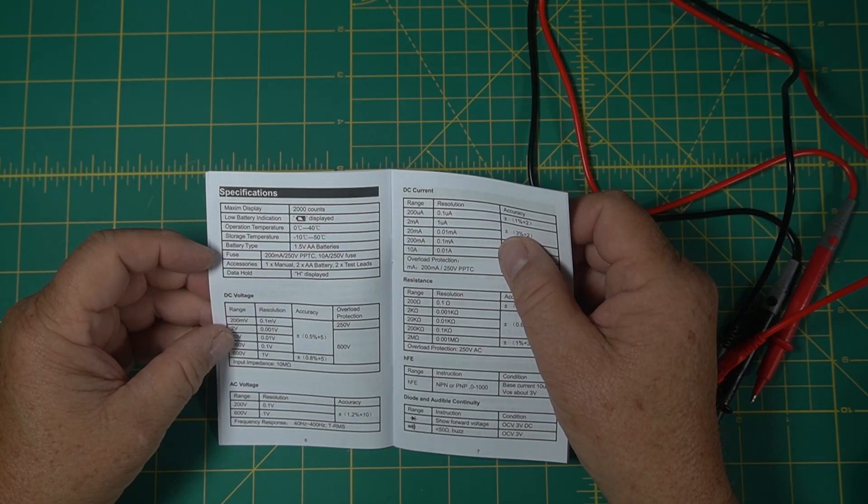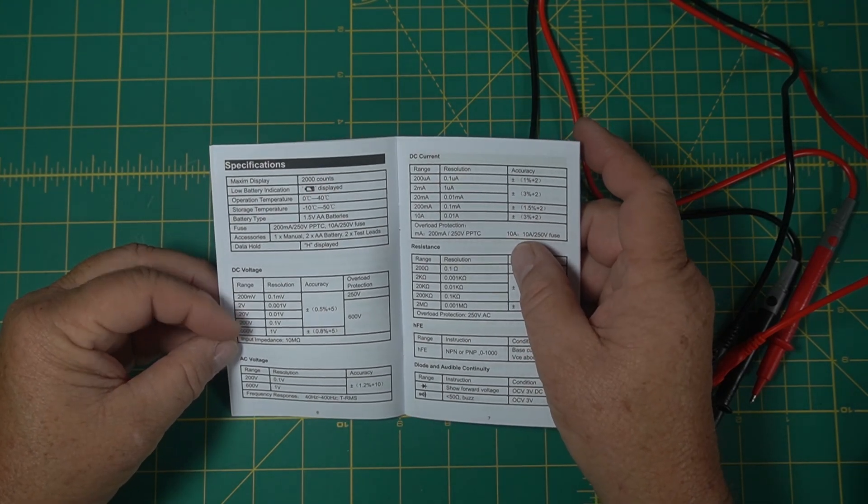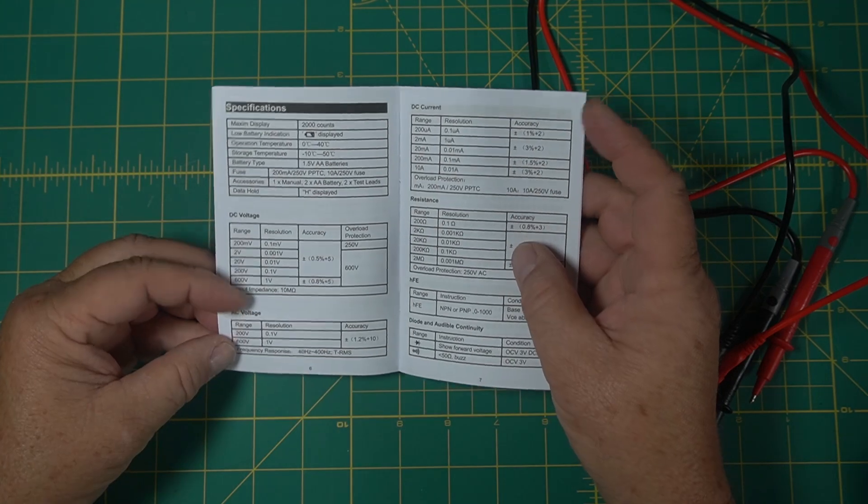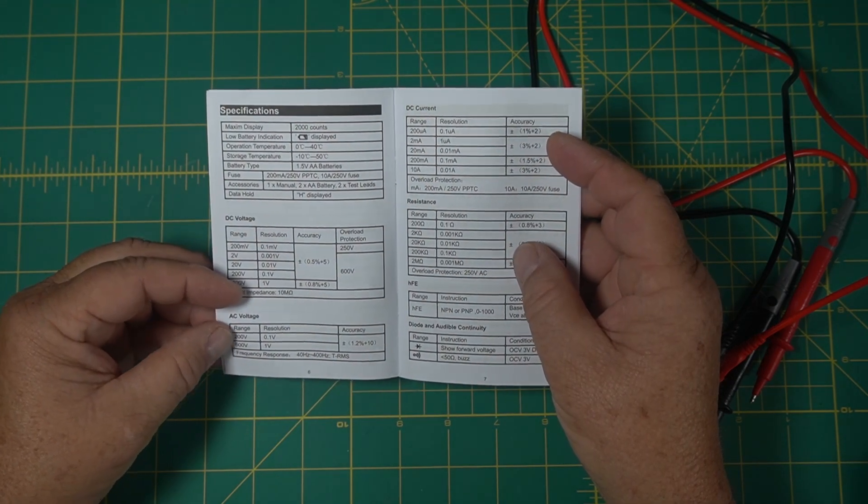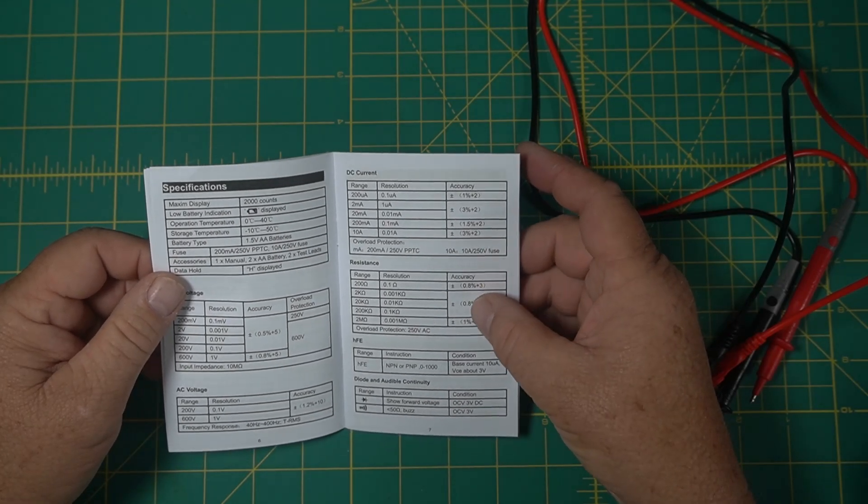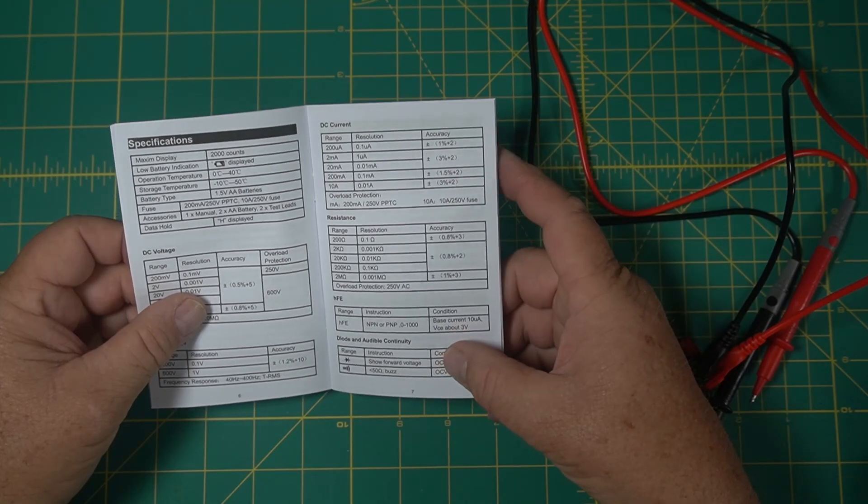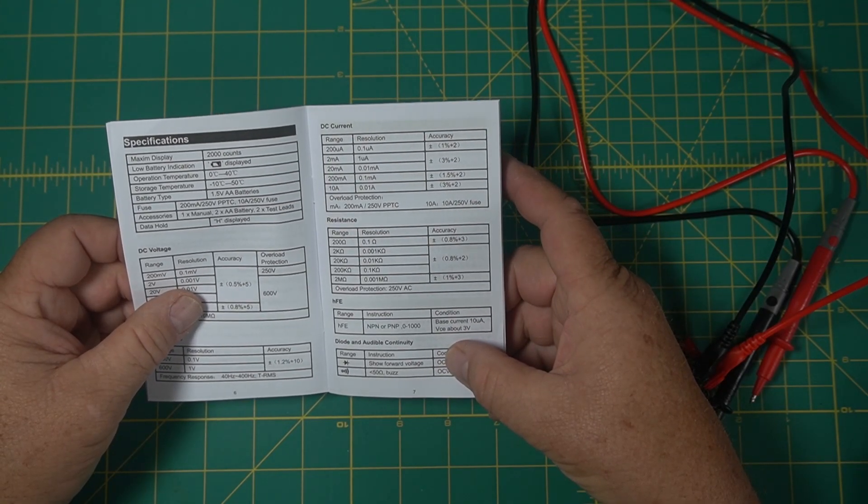So it's a 2000 count maximum on the display. Takes two AA batteries and they were supplied. I put them in already. It has a fuse. Here's your ranges here. Your AC voltage here. Your DC current. Your resistance. And again, your transistors and diode and audible continuity.